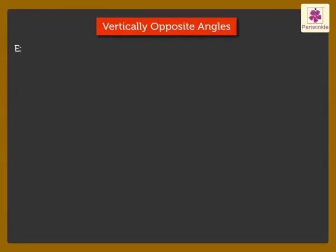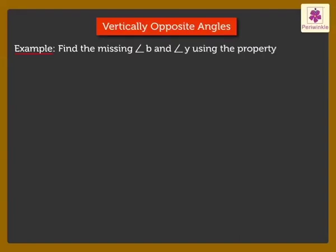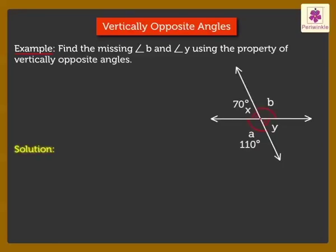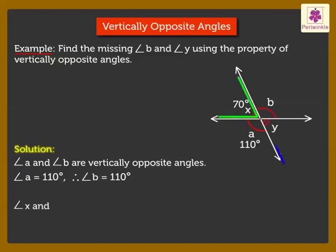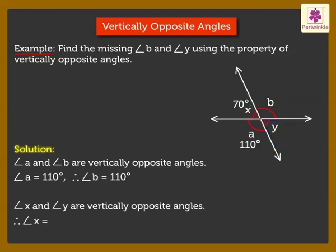Now, let's solve an example. Find the missing angles B and Y using the property of vertically opposite angles. From the figure, Angle A and Angle B are vertically opposite angles, and Angle A measures 110 degrees. Hence, Angle B is also equal to 110 degrees. Angle X and Angle Y are the other pair of vertically opposite angles. Hence, Angle X is equal to Angle Y, which is equal to 70 degrees.